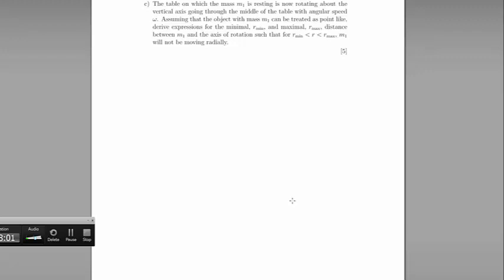Part C introduces some circular motion to the question. The table in which the mass is resting is now rotating about the vertical axis going through the middle of the table with angular speed omega. Assuming that the object with mass M1 can be treated as point-like, derive expressions for the minimal R min and maximal R max distance between M1 and the axis of rotation such that when R is between those values, M1 will not be moving radially.